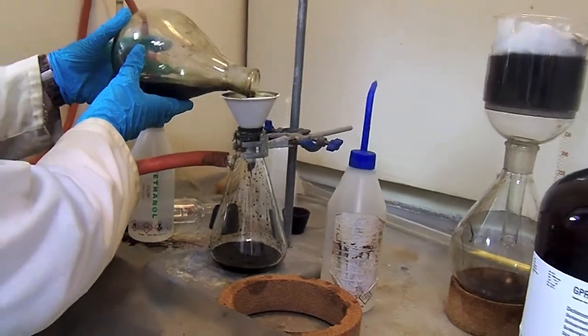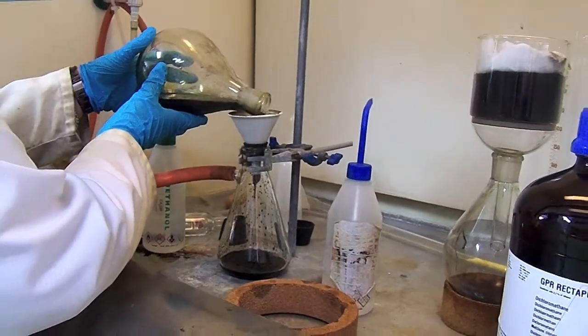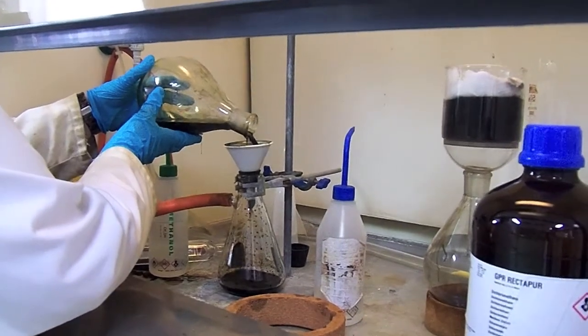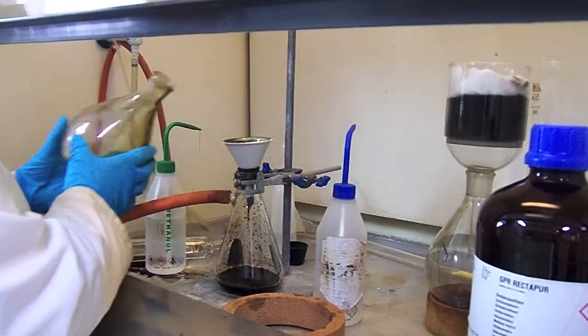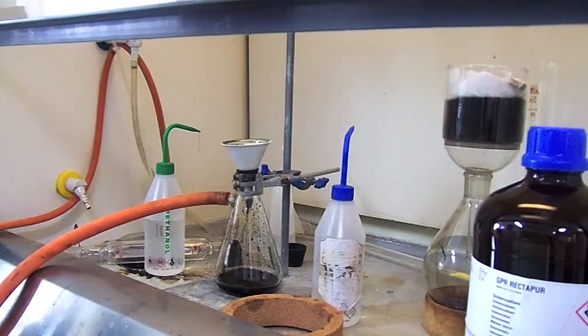Filter your precipitated porphyrin product into a suitably sized Buchner funnel using additional methanol to wash the porphyrin if necessary. After precipitation you will end up with a lovely purple solid which you can put into a sample vial to dry.